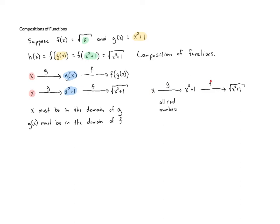Next, I want to look at the function f and talk about its domain. f of x is the square root of x, and we know the domain is numbers x such that x is greater than or equal to zero — we cannot take a square root of a negative. So the thing that we're inputting into f needs to end up being greater than or equal to zero. What are we inputting? We're inputting x squared plus one, so that needs to be greater than or equal to zero. This is what we have to worry about with the first function — the domain is all real numbers, we're good — but here we've got to make sure that the input x squared plus one is greater than or equal to zero.